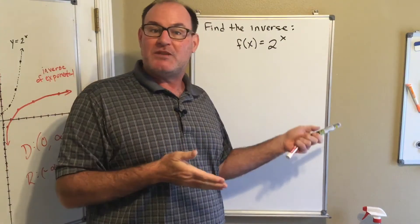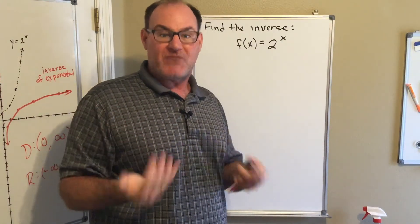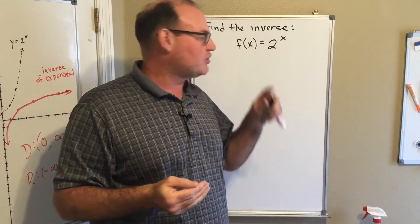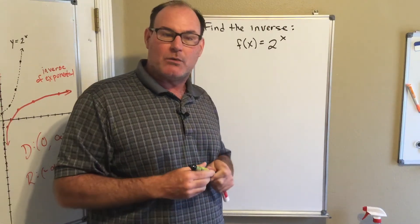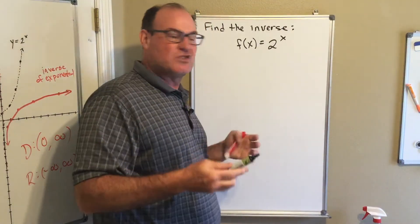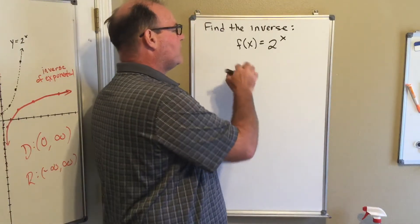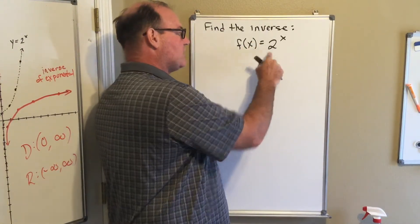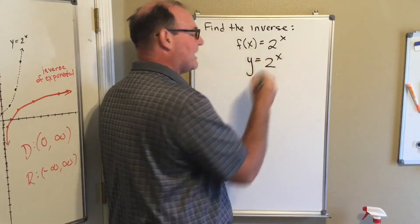These are the same steps we used previously. If you need to review finding the inverse of a function, go back to our previous section where we did this with lines and a square root. Step one: change the notation. I change this to y equals 2 to the x.